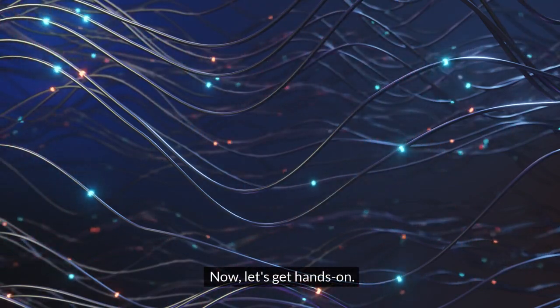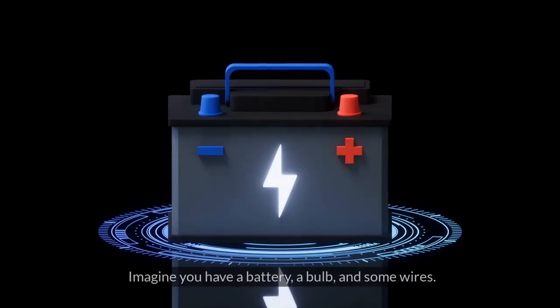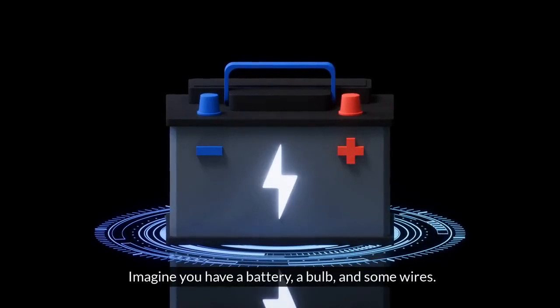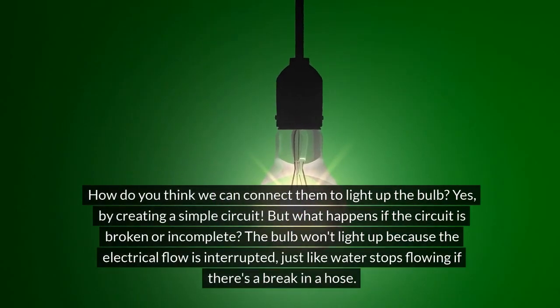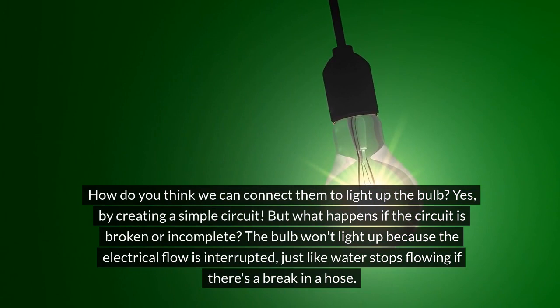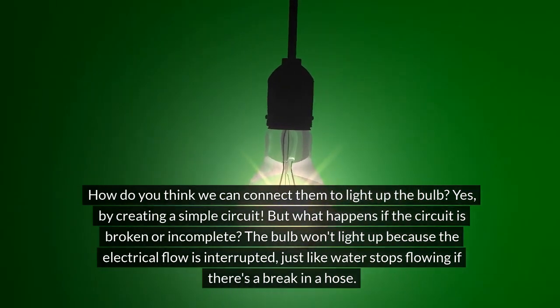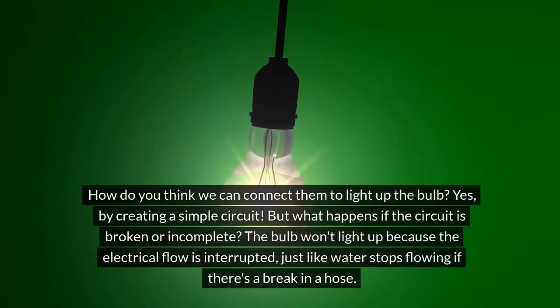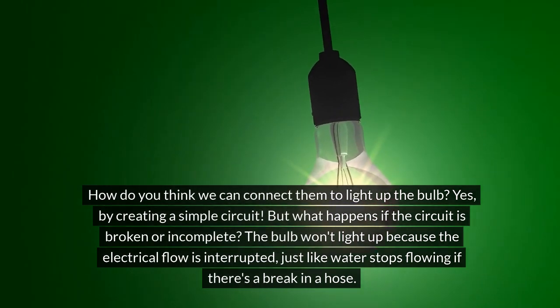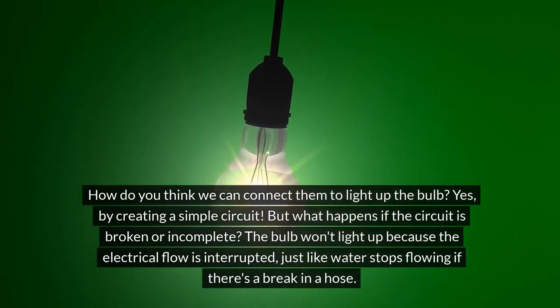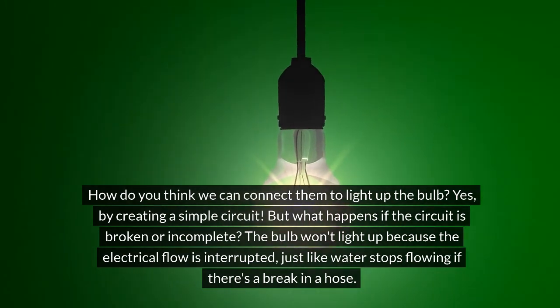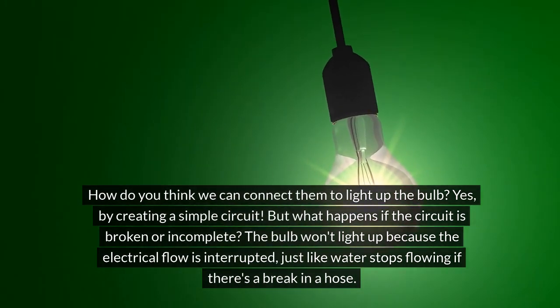Now, let's get hands on. Imagine you have a battery, a bulb, and some wires. How do you think we can connect them to light up the bulb? Yes, by creating a simple circuit. But what happens if the circuit is broken or incomplete? The bulb won't light up, because the electrical flow is interrupted, just like water stops flowing if there's a break in a hose.